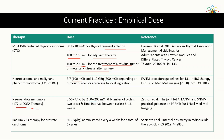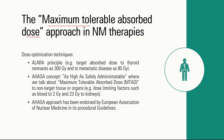In lutetium DOTATATE therapies, the dose is 150–200 mCi given over 6 cycles with a time interval of 6 to 16 weeks between cycles. In radium-223 therapy for prostate carcinoma, the dose is 50 kBq per kg every four weeks for a total of six cycles. There is a concept called maximum tolerable absorbed dose, where the dose given is as high as possible without significantly affecting non-target tissues.